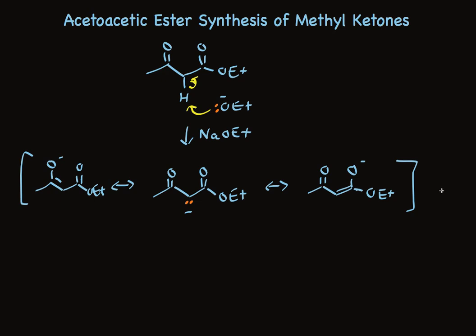Although the resonance structures that have the negative charge on oxygen are the major contributors, this enolate typically alkylates at carbon. The enolate acts as a nucleophile in an SN2 reaction. This makes the new carbon-carbon bond and builds the molecule.